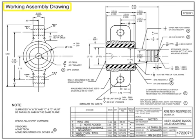Working assembly drawings combine detail drawings and assembly drawings. These drawings contain enough information to both create the sub-components and assemble the finished product. Working assembly drawings show dimensions where required as well as balloon identifiers to indicate each separate component part of the assembly. Working assembly drawings are ideal for smaller, simpler assemblies. Since they combine both detail and assembly characteristics, they can become complex very quickly.